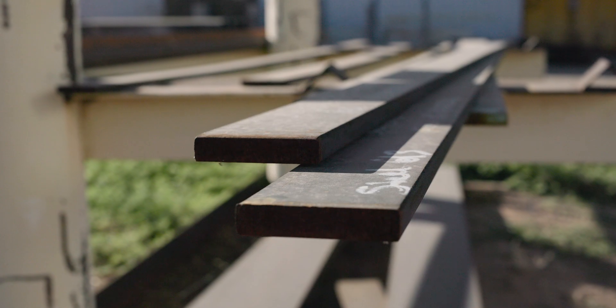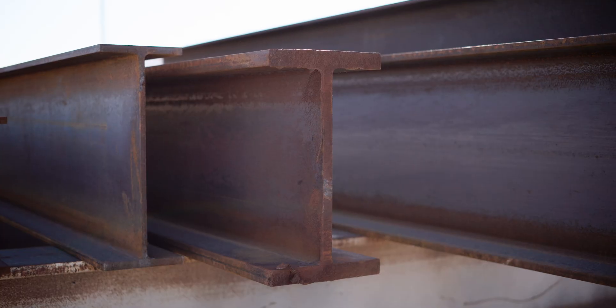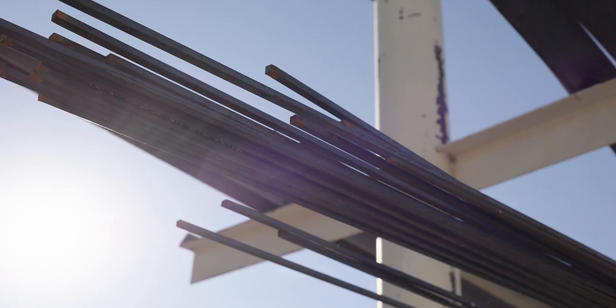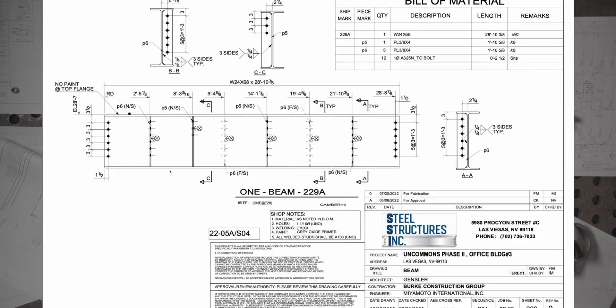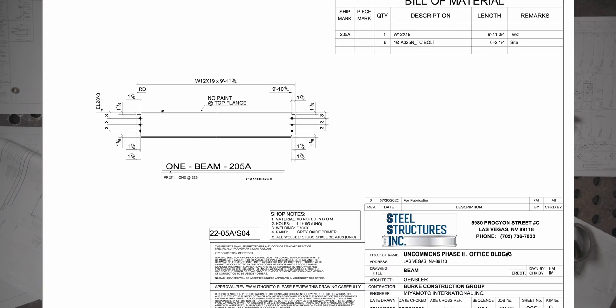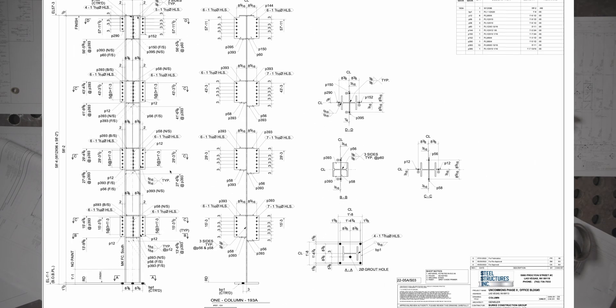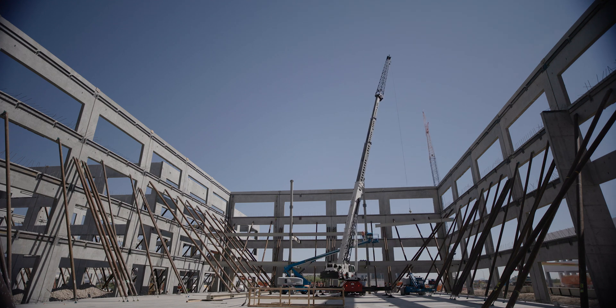The fabrication process is taking raw steel material shapes delivered from a mill or distributor and creating the assemblies and parts that will ultimately be used to frame and erect structures. Now let's get into each step of the fabrication process.